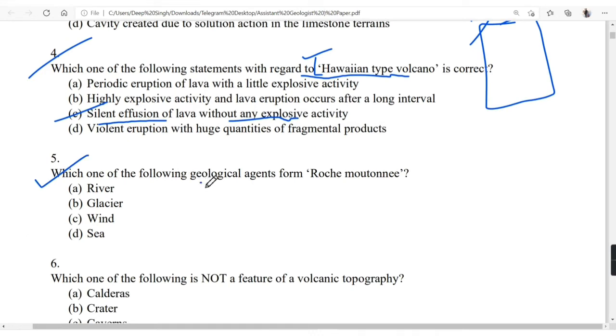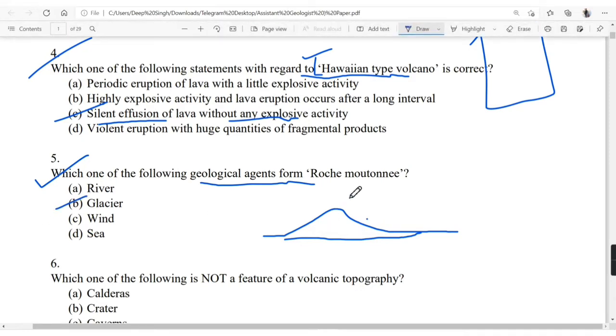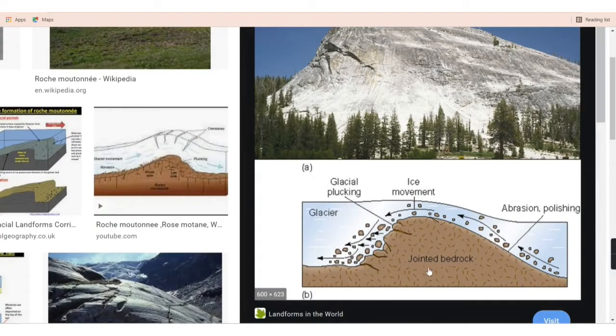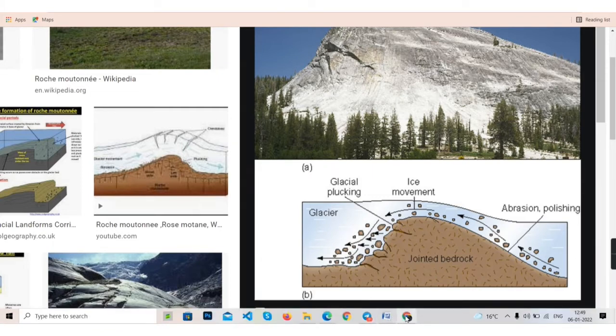Next, which of the following geological agent forms roche moutonnée? It will be basically formed by the glacier. This will be jointed bedrock or more resistant rock which will not get abraded, and the upper part is getting abraded as well as polished. In this direction ice movement is occurring and in this direction plucking is going on. This is a diagram of roche moutonnée which will be formed by the glacier.